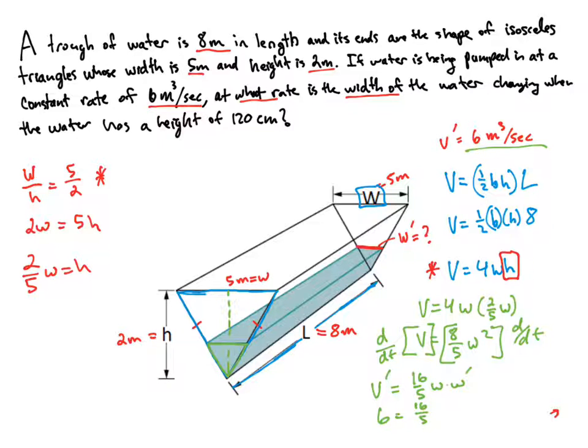Now W, we don't have a value for W, but we can find the value for W using our proportion over here. So we're going to try and find W in that proportion and we're given a height, which is 120 centimeters. Now it's going to be a good idea to write that into meters. So that's going to be 1.2 meters.